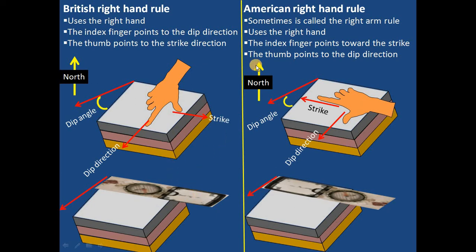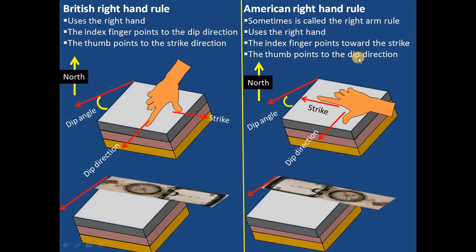With the American right-hand rule, which is sometimes called the right-arm rule, it's the same — it uses the right hand — but the index finger now points toward the strike. You see that in the British right-hand rule the index finger points toward the dip direction, whereas in the American right-hand rule the thumb points towards the dip direction.